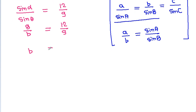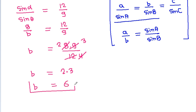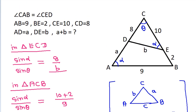So B will be equal to 8 times 9 over 12. Since 3 times 3 is 9, 3 times 4 is 12, and 4 times 2 is 8, B is equal to 2 times 3, so B is equal to 6.